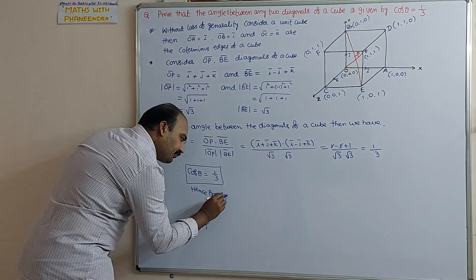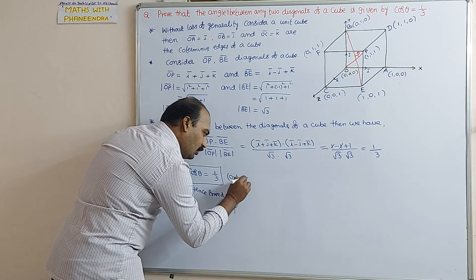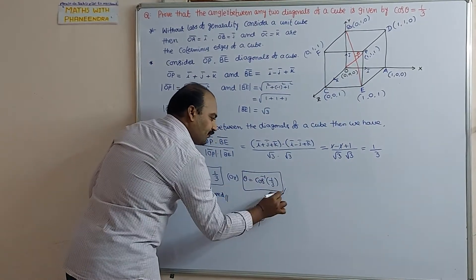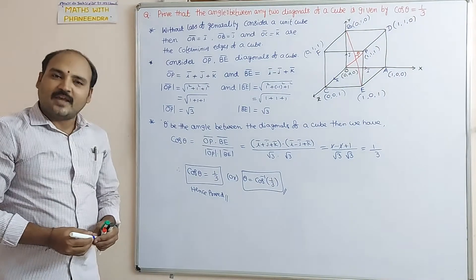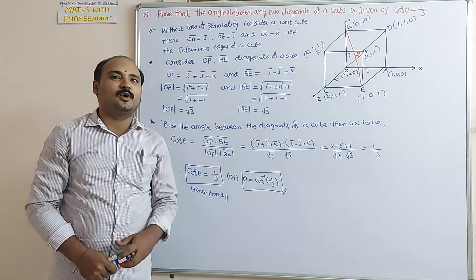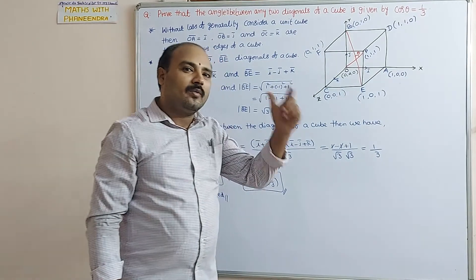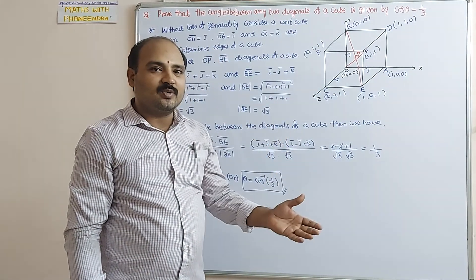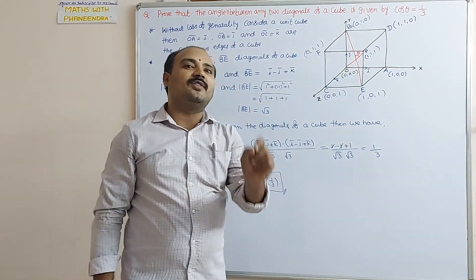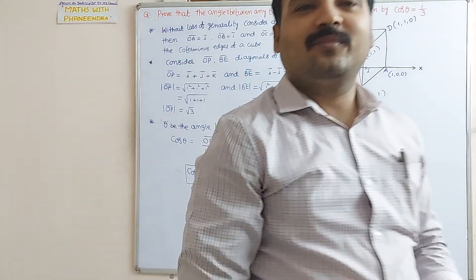Otherwise, we can write theta equal to cos inverse of 1 by 3. Thank you, dear students, for watching this channel. If you have any doubt, you can write in my comment box and I will respond. In the next video, based on the cube, we have one more problem: cos²θ₁ + cos²θ₂ + cos²θ₃ + cos²θ₄ equals 4 by 3. We will discuss that in the next video. Thank you all.